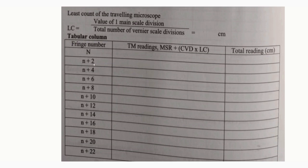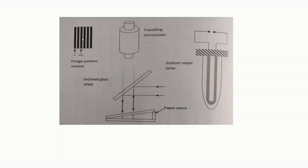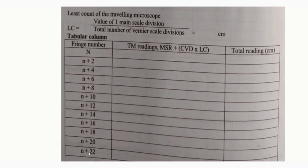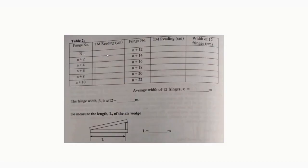After taking the reading for the nth fringe, move the crosswire intersection to the (n+2)th fringe and take the reading again. Similarly, continue up to the (n+22)th fringe, taking readings for every second fringe. The total reading is calculated by the formula: MSR + (CVD × LC). Then enter the same data in table number 2. Take the difference between the nth fringe and (n+12)th fringe reading to get the width of 12 fringes. Similarly, for (n+2) and (n+14), and so on up to (n+22), getting the fringe width for 12 fringes each time.